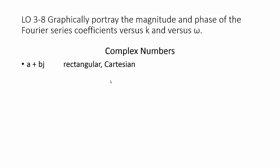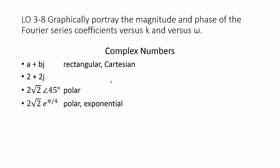We can write a complex number a plus bj in rectangular or Cartesian form. For instance, 2 plus 2j is written in rectangular form. That same number can be written as 2 square root of 2 at angle 45 degrees — polar form — or as 2 square root of 2 times e to the j pi over 4, which we call polar or exponential form.